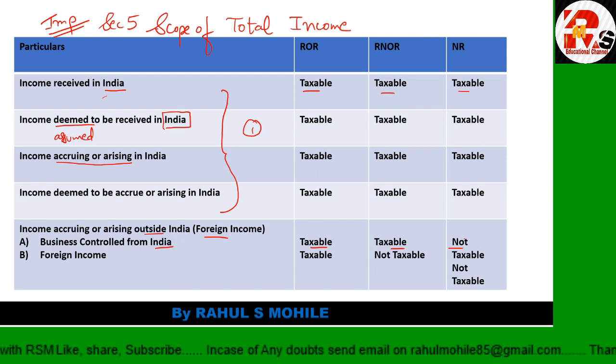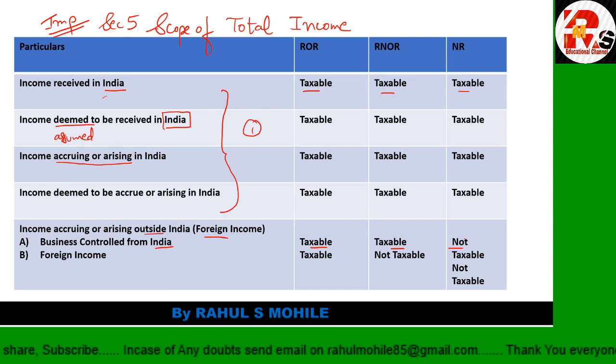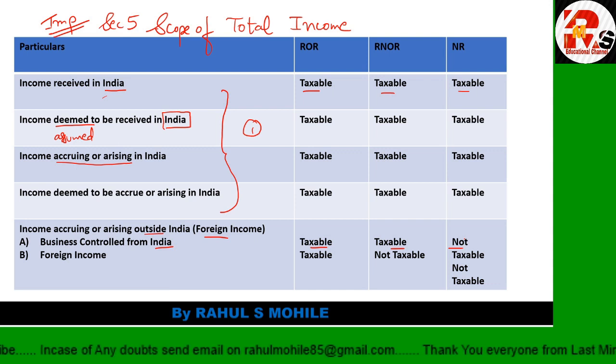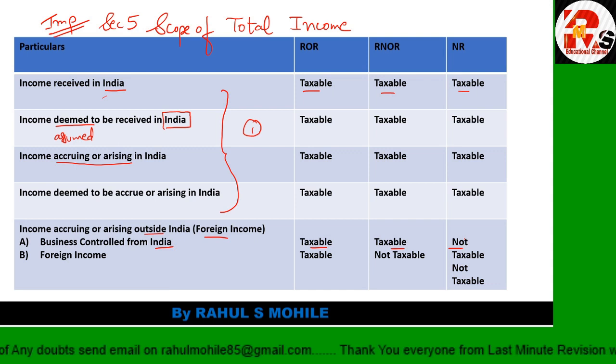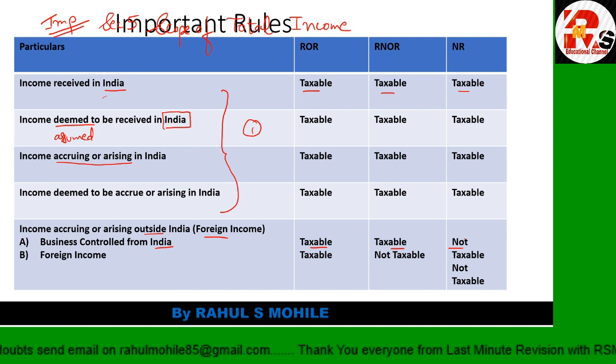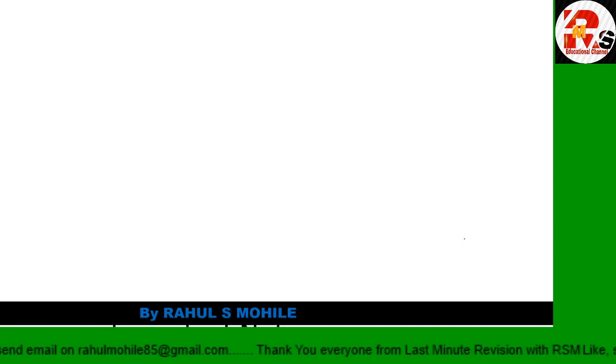To summarize: if income received in Russia is given with no further details, it is taxable for only the first (ROR), non-taxable for second and third. If 'income received in Germany, controlled from India' is given, then first and second are taxable, third is non-taxable. If 'income received in US, business controlled from Delhi' is given, first and second are taxable, third is non-taxable. This is the Scope of Total Income chart - a very important chart that helps solve 15-mark questions in the paper.